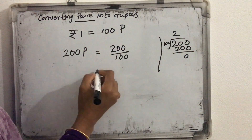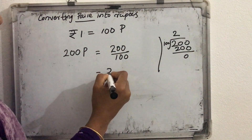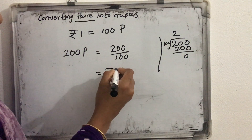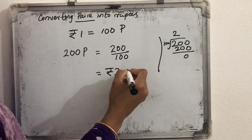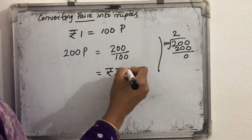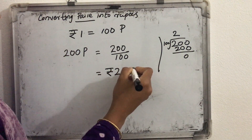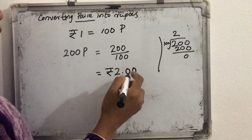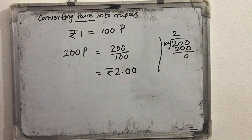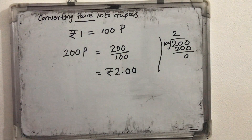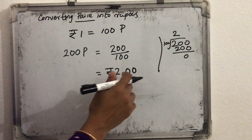So how much rupees here? That is 2 rupees, and the remainder is 0. So that will be represented as 2 and then 0 after the decimal point. So we can write it as 2 rupees.